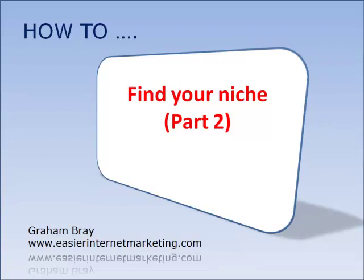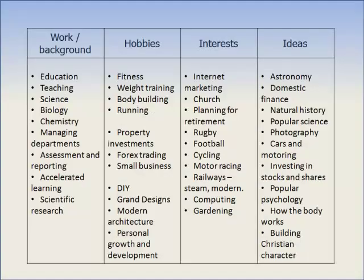Let's just remind ourselves about a table we used last time. In this table, we spent about 30 minutes or so listing possible niche areas under four headings: work and background, hobbies, interests and ideas. I hope you managed to have a go at this yourself and I'm sure you are quite amazed at the number of potential niches.